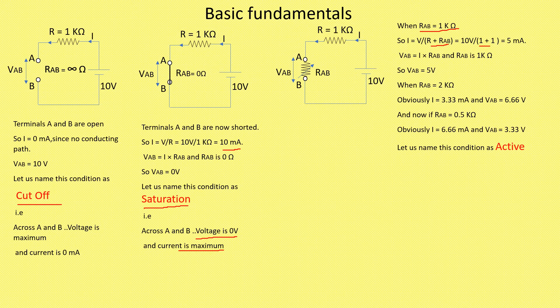If I calculate I, it becomes 5 milliampere. And if I is 5 milliampere, I can get VAB is equal to 5 volts, because VAB is equal to I into RAB. So when RAB is 1 kilo ohm, I am getting I is equal to 5 milliampere and VAB is equal to 5 volts.